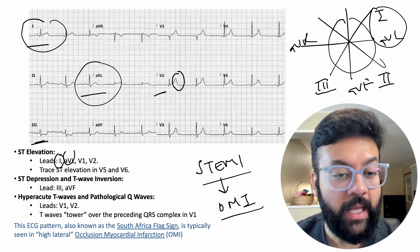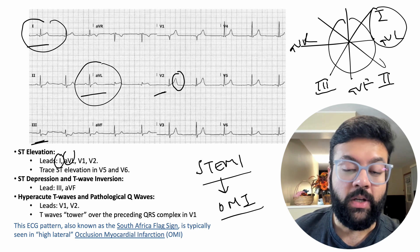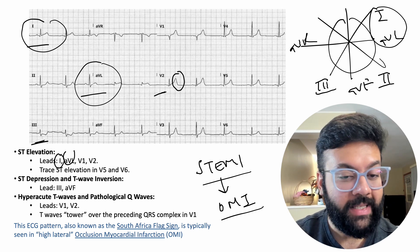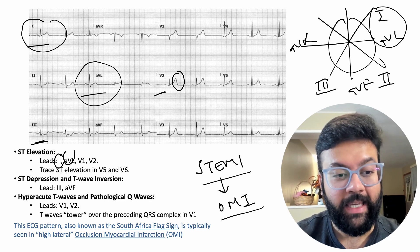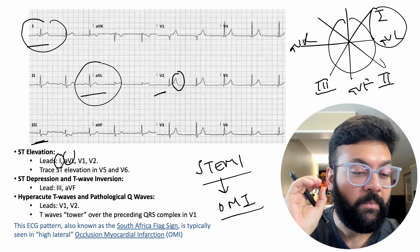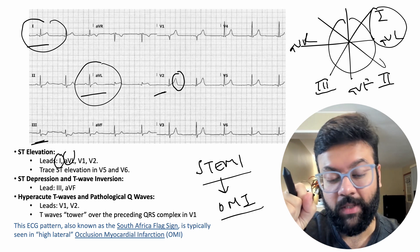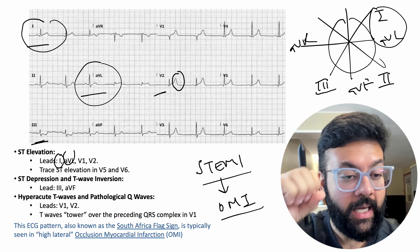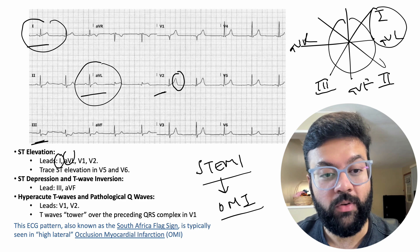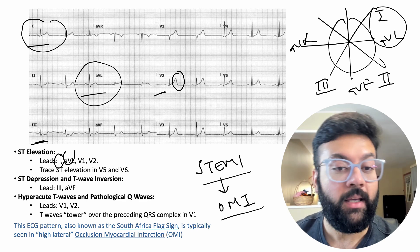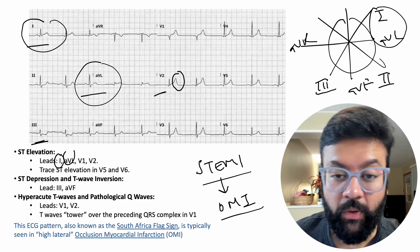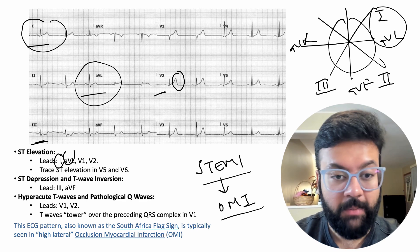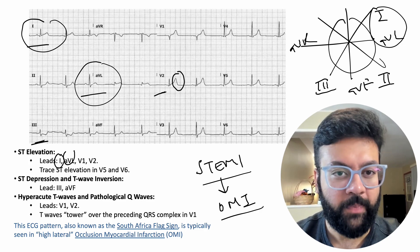The reason to transition from STEMI to OMI is that even with an NSTEMI, there are cases where you can have complete coronary artery occlusion. So instead of using STEMI, they are moving towards using OMI. This is high lateral STEMI or high lateral OMI.